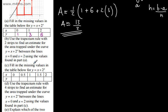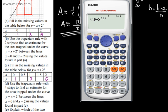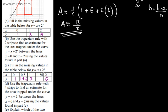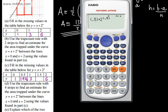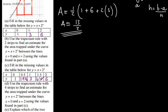In part C, we fill in the missing values in the table for y equals x plus 2 to the x. We already know that x equals 0 gives 1, x equals 1 gives 3, and x equals 2 gives 6. Substituting x equals 0.5 gives 1.914, and substituting x equals 1.5 gives 4.328.